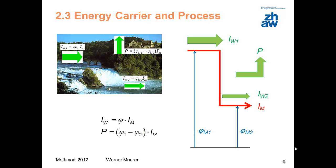This principle can be applied to the other six quantities as well. Each potential also indicates the amount of energy with which the related flow is charged. When the flow of a substance-like quantity falls through a potential difference, power is released.